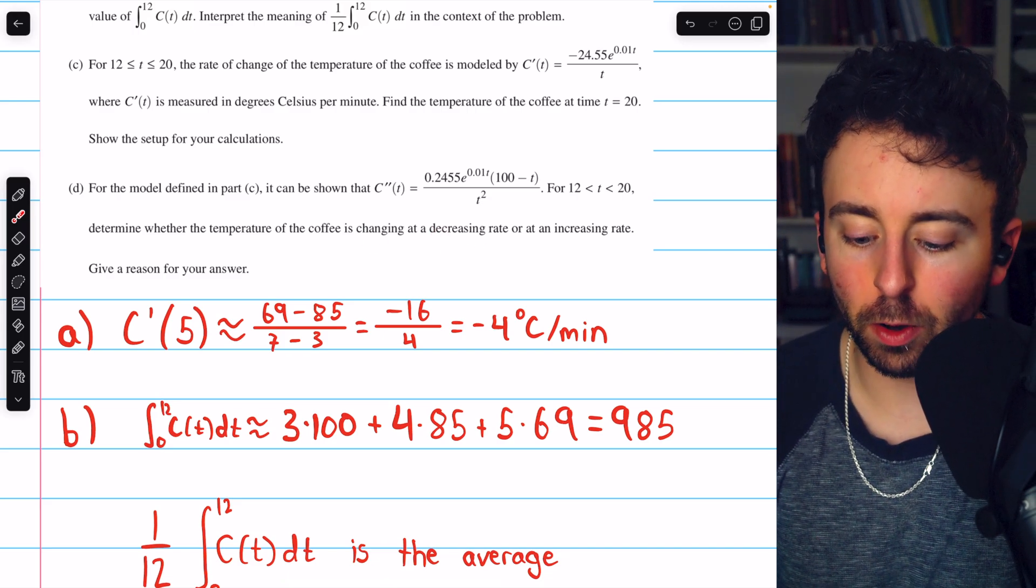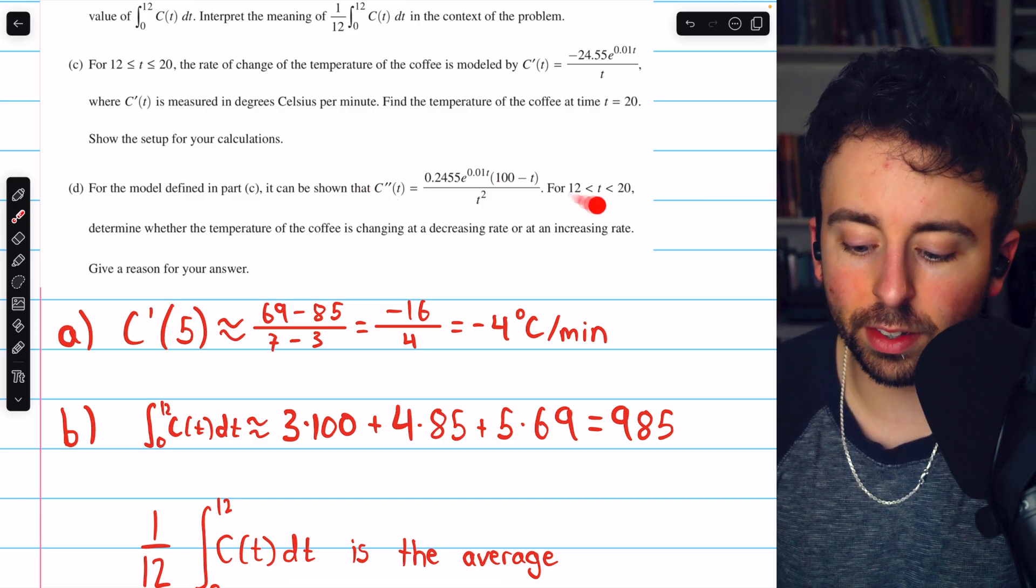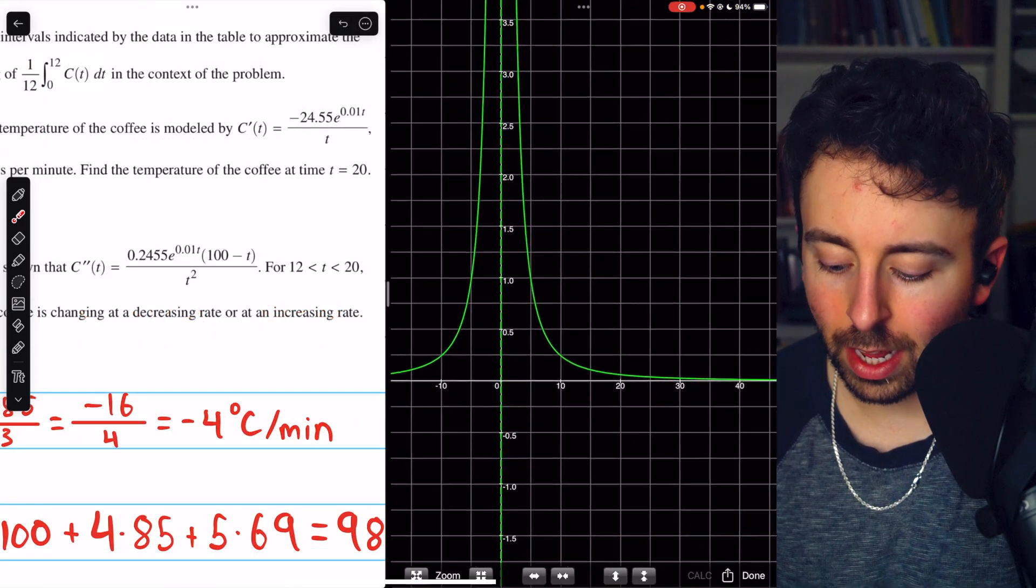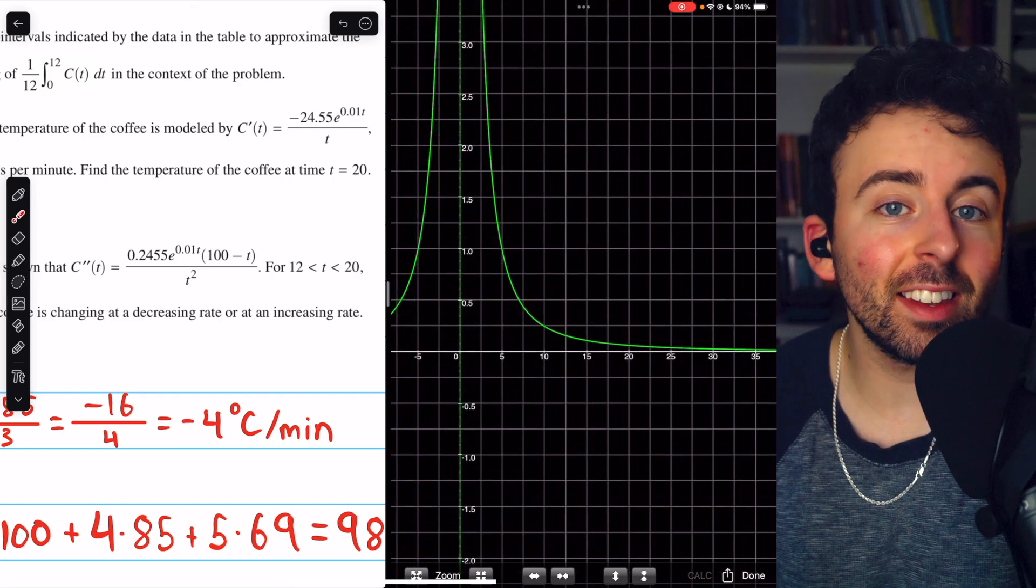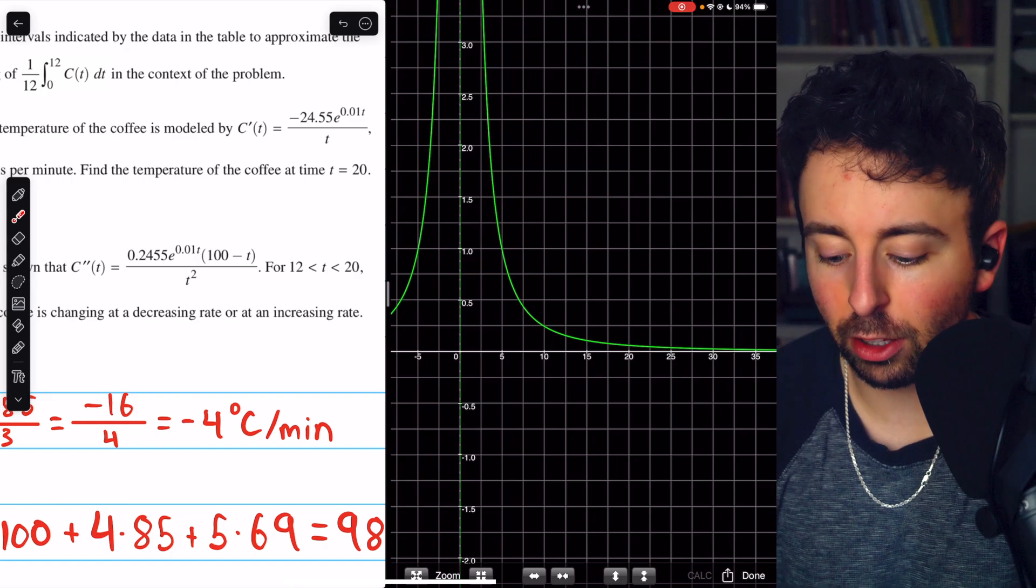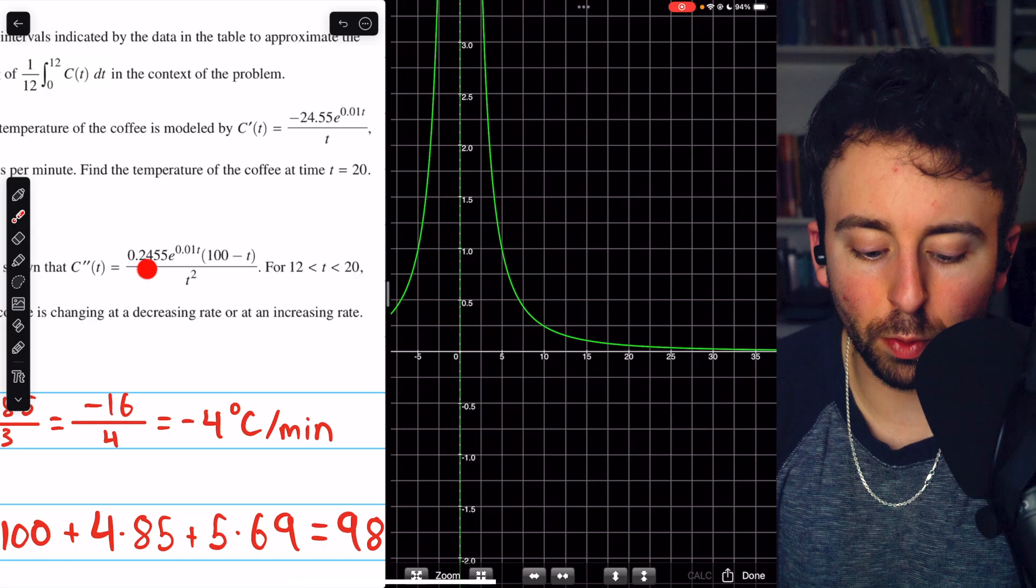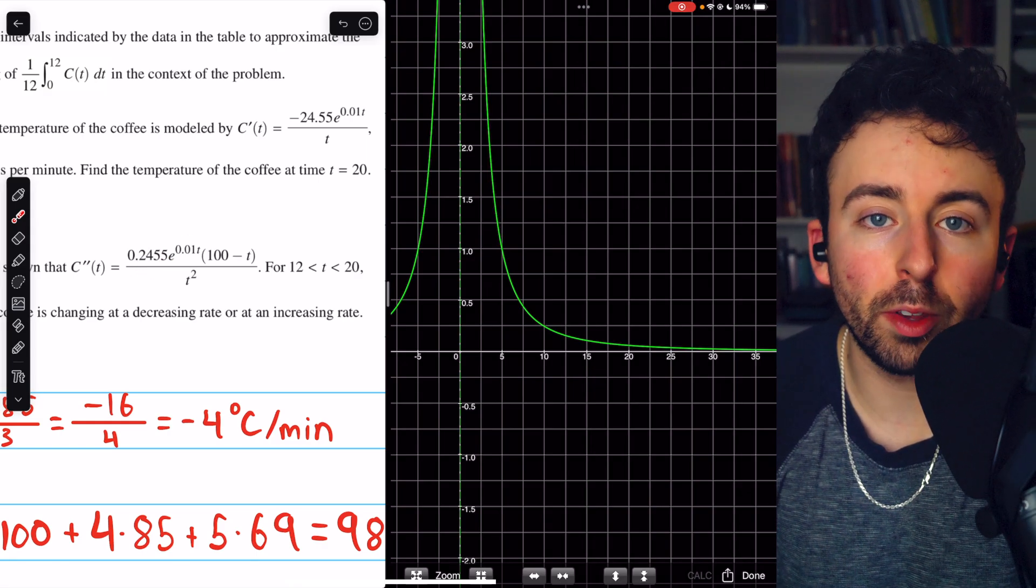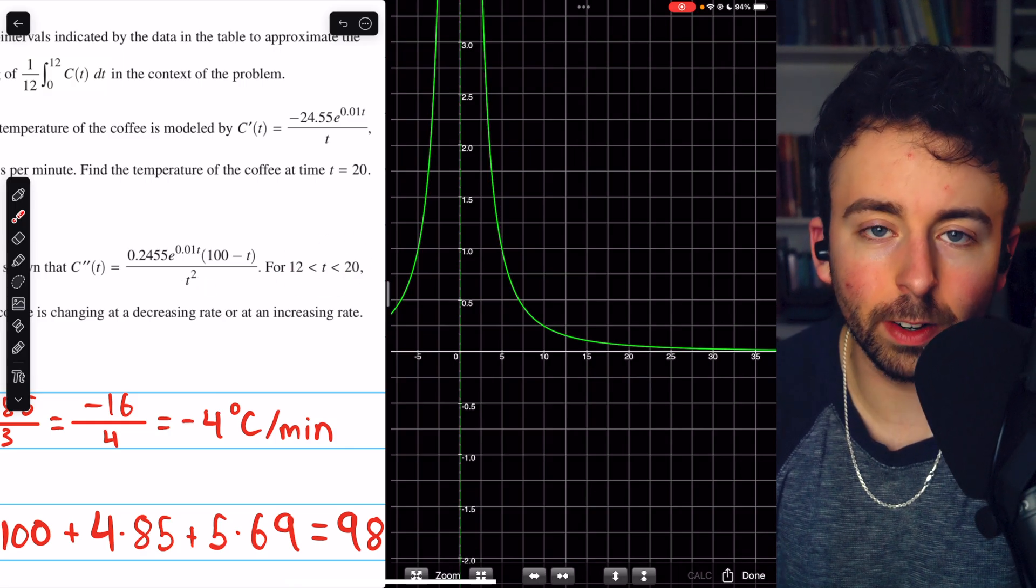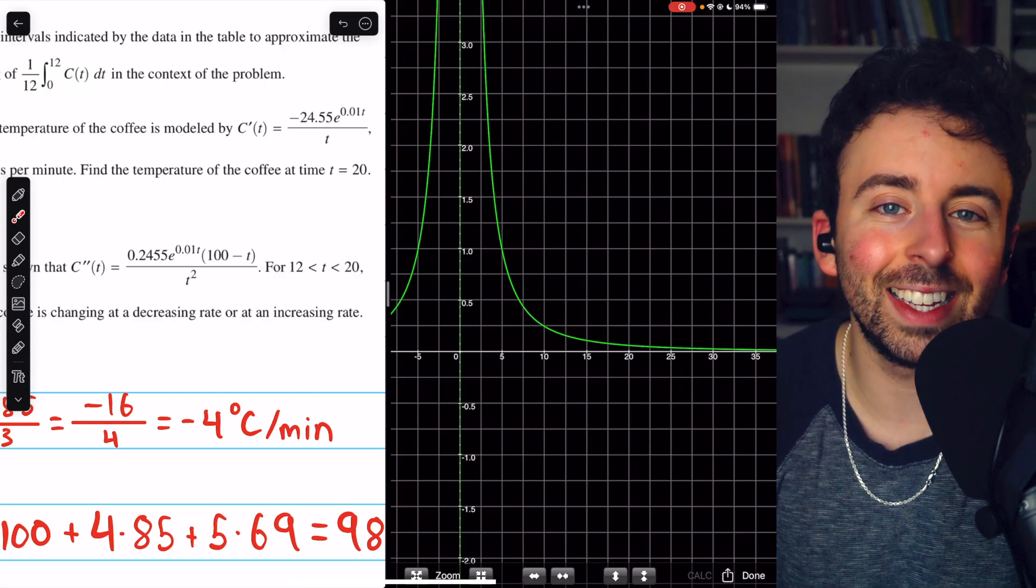So let's just use our graphing calculator to graph this function and see what its behavior is, positive or negative, on this interval from 12 to 20. All right, I've typed the second derivative into the graphing calculator, and here it is. We can see at a glance that the second derivative is certainly positive for t between 12 and 20. That's what the graph suggests. And looking at the function, that makes sense, because 0.2455 is positive, e to a power is always positive, 100 minus t is positive on this interval, and t squared is also positive. So yeah, second derivative is positive, so the first derivative is increasing.